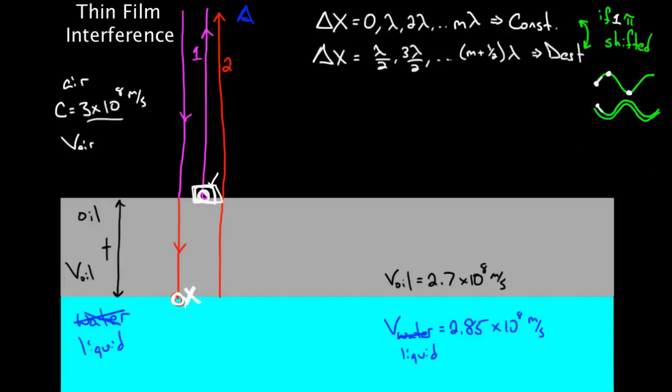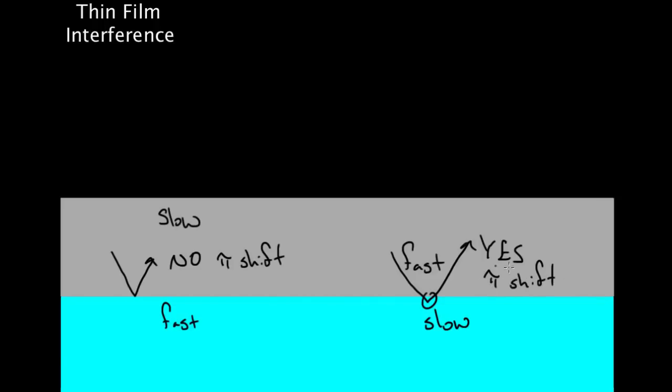So, let me just be clear here. Let me show you what I'm talking about. If I had a material, and right here it's slow, compared to this one, if it reflects off of a fast material, no pi shift, no 180 degree shift. But if it's in a fast material, and it reflects off of a slow material, then yes, this gets a pi shift, a 180 degree shift. That's how you determine it, is whether it reflects off of a fast material, or if it reflects off of a slow material.